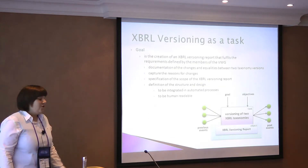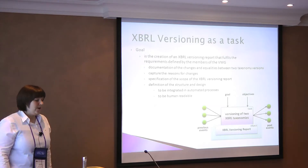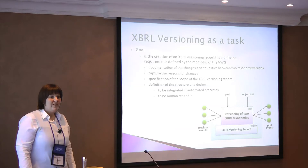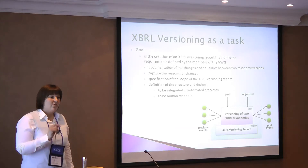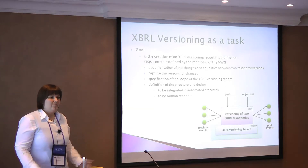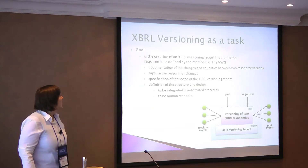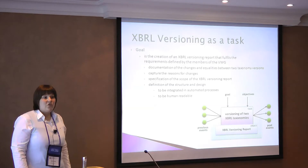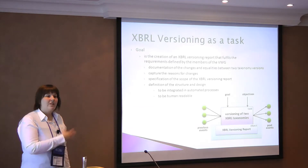The goal of XBRL versioning is to have a version report that fulfills all requirements. These requirements were collected in our Versioning Working Group and are represented in the versioning requirements document. We want documentation of all changes and equalities between two taxonomy versions, and to capture all reasons why changes have been made. We want a specification for the scope — as a project manager, to say which versions should be included — and a definition of structure and design to enable automated processes. It should also be human readable, reviewable by business users with contextual demands.